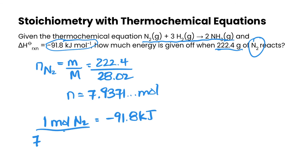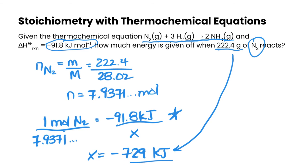And so if we have 7.9371 moles of nitrogen, we want to figure out how many kilojoules of energy we're producing. So this is how we set up our ratio. And then that gives us, if we round off to significant digits, negative 729 kilojoules. So that means when 222.4 grams of nitrogen is reacting, we are giving off 729 kilojoules of energy. So very simple to use stoichiometric ratios with thermochemical equations.